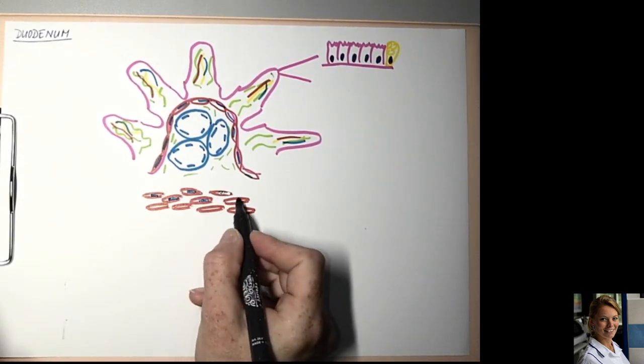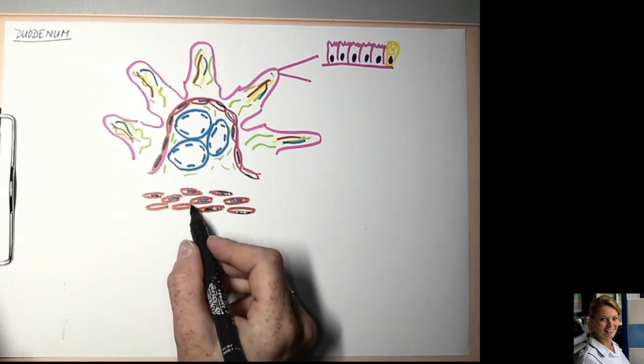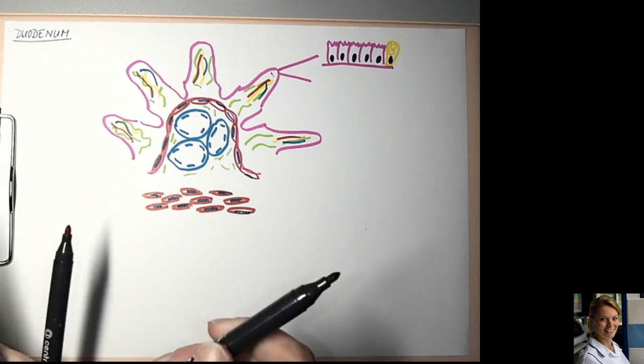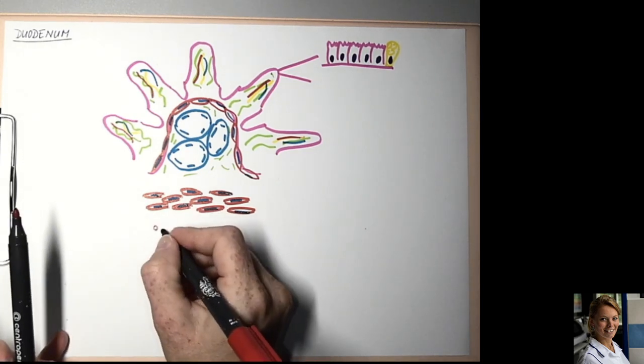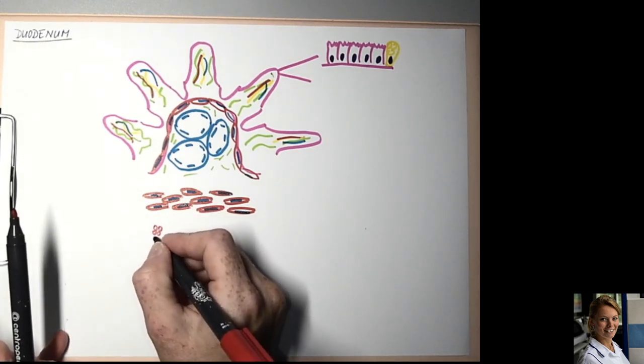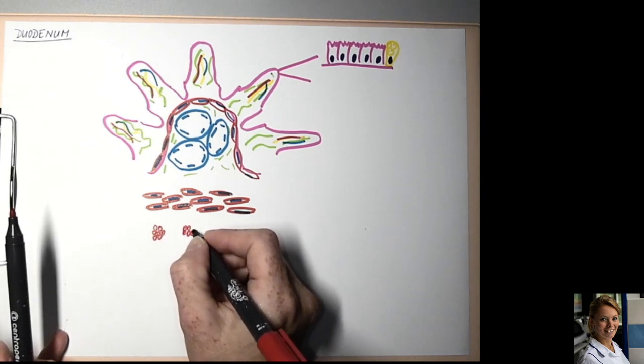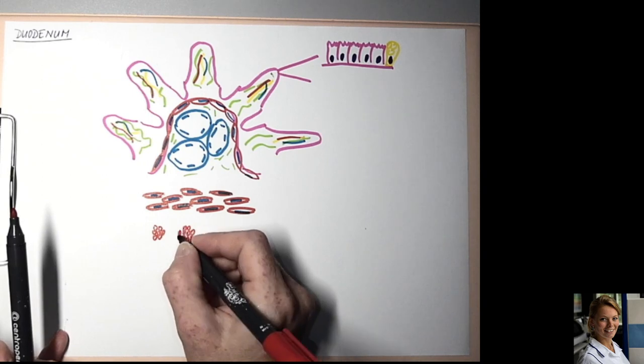This is the circular layer: smooth muscle cells and their elongated nuclei. And the longitudinal layer. You can see smooth muscle cells in cross section.